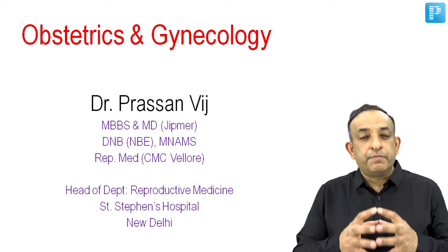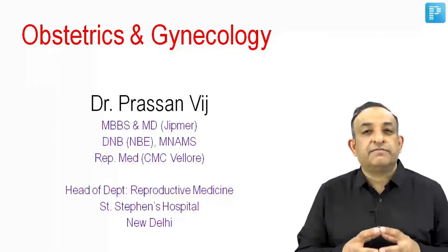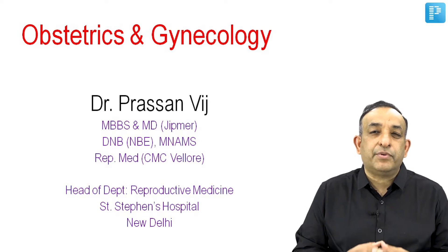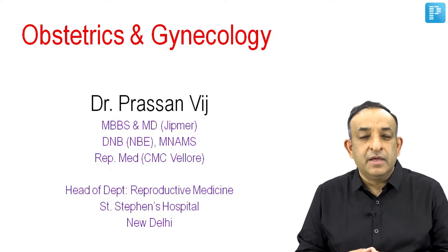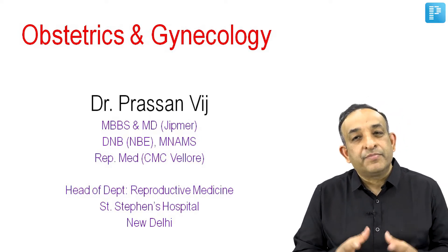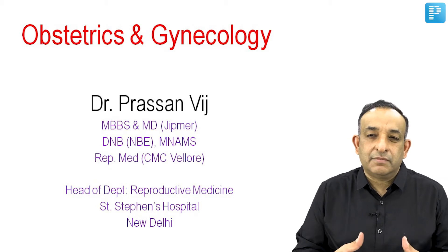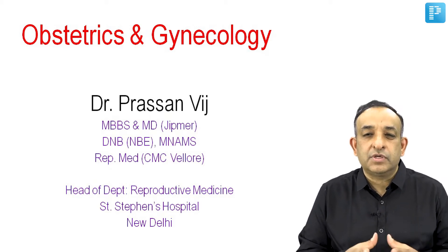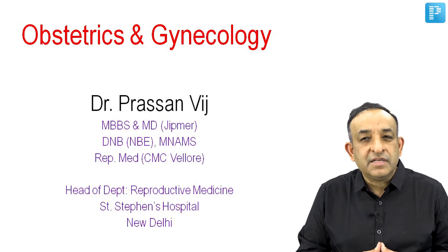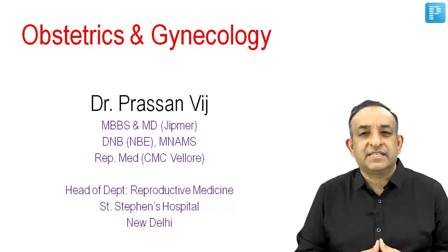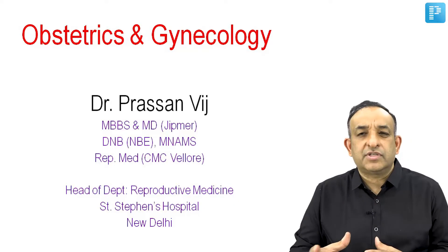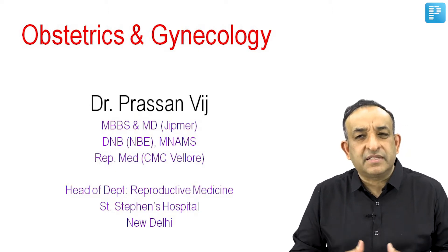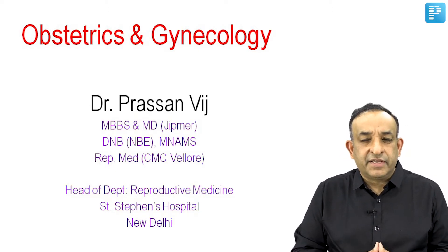The best way to assess the fallopian tubes and the pelvic anatomy in an infertile woman is to do a laparohysteroscopy, which is what we are going to see in this video. This was shot in my OT some 15 days back when I was operating on a woman who was infertile for around 7 to 8 years. She had all the basic tests — the hysterosalpingography and ovulation induction — but she was not conceiving.